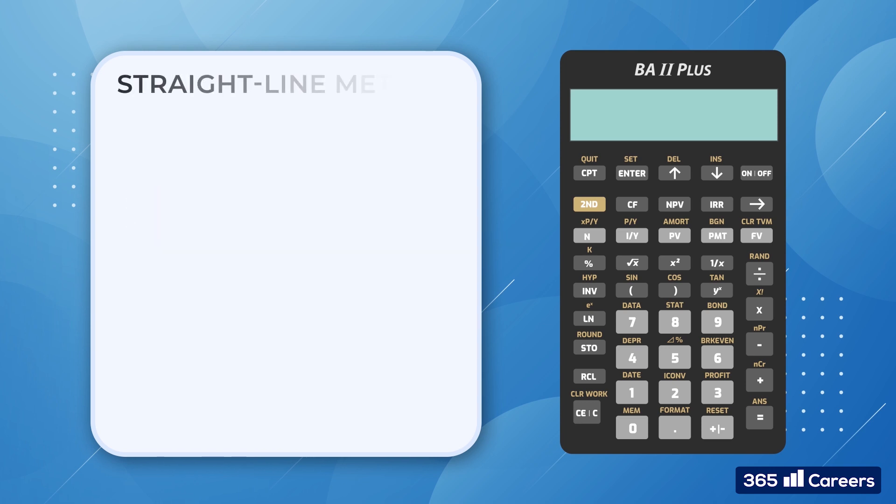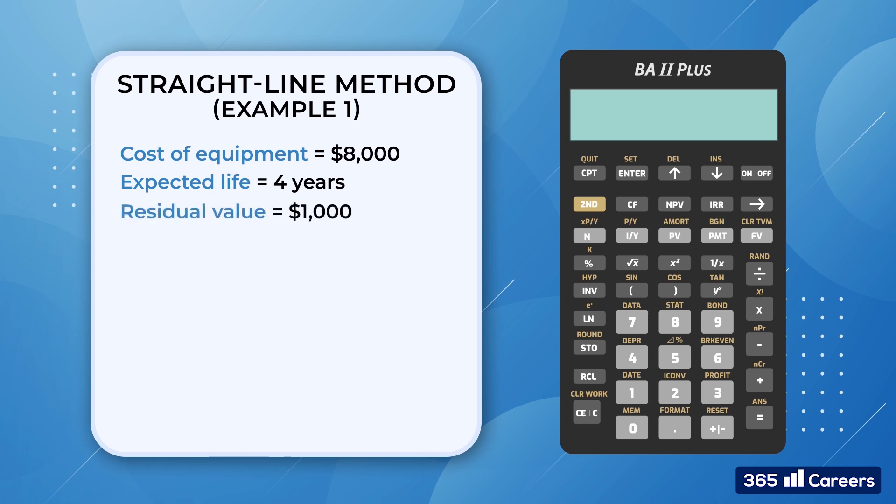Imagine we have the following problem. A piece of equipment costs $8,000. It has an expected life of 4 years and a residual value of $1,000. What is the equipment's depreciation expense and net book value in year 3?